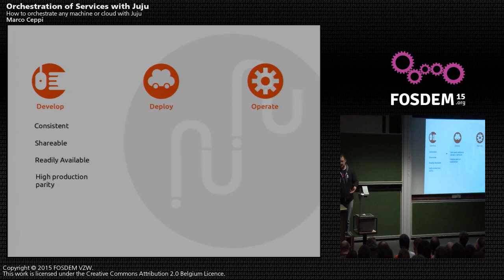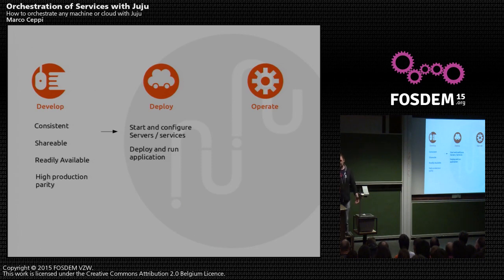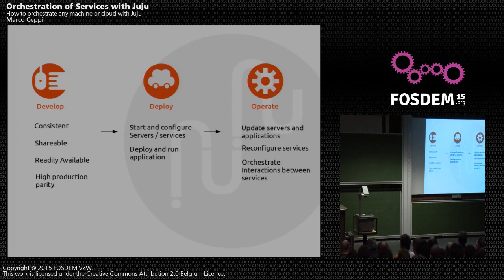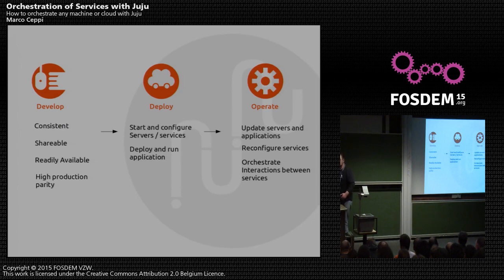With all of these in mind, we go to the next stage: deployment. Deployment is pretty straightforward — we just want to start and configure some services and put our applications there. But whenever we get to ops, we also need to think about the service lifecycle, how we're going to manage it, how we're going to reconfigure services as we start introducing new microservices into the stack, and how we're going to work with the interactions between those services.